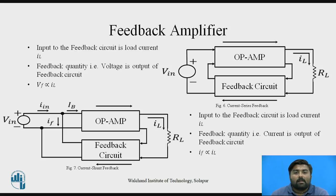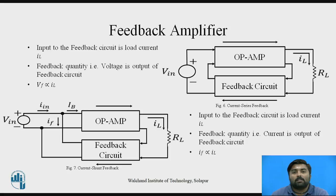Last is the current shunt feedback amplifier. Figure 7 shows the current shunt feedback amplifier. It has IL, the load current flowing through load resistor RL, as the output of the op-amp, which is similarly input to the feedback circuit. The output of the feedback circuit is IF, the current flowing through the feedback circuit, which is connected as input to the op-amp. The op-amp has two inputs: first is V-in (input current) and second is IF (feedback current). The input to the feedback circuit is the load current and the feedback quantity is current, so IF is directly proportional to IL.